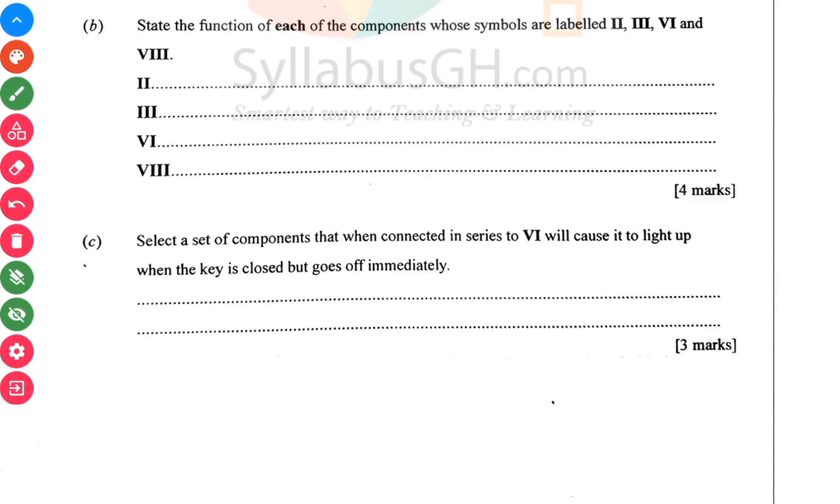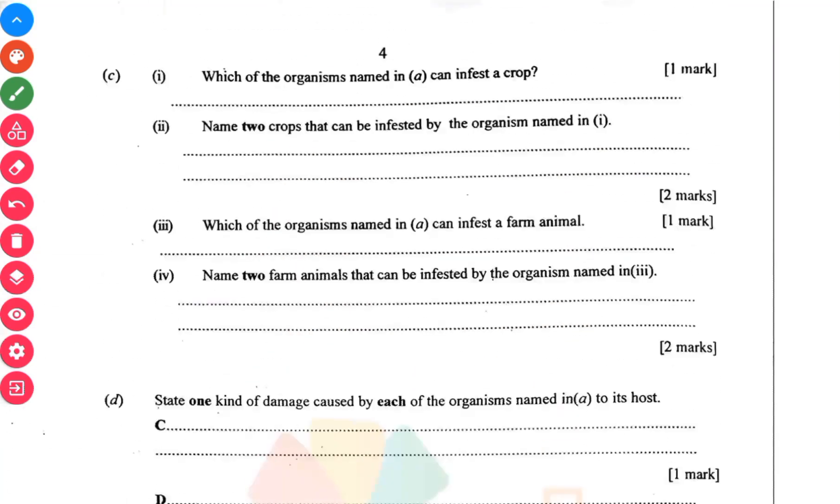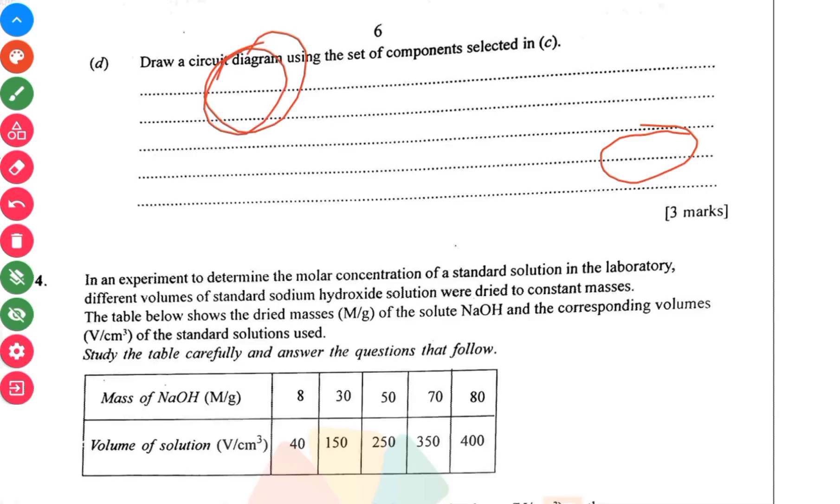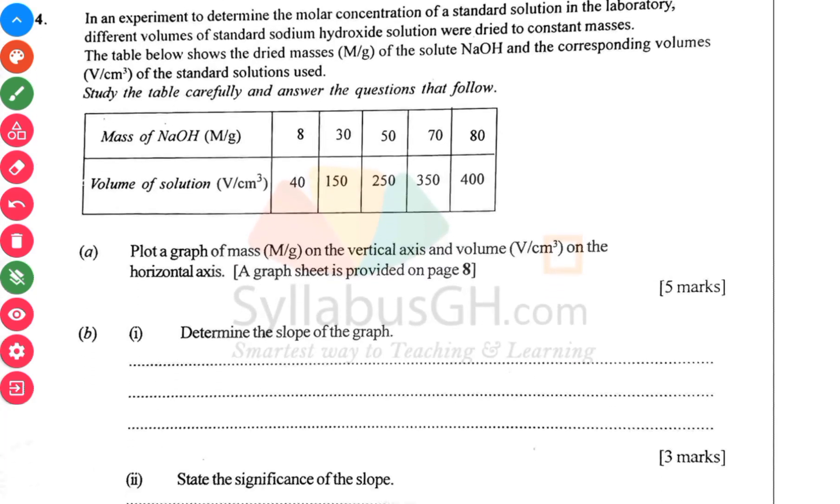C says select a set of components that when connected in series to VI will cause it to light up when the key is closed but off immediately. The set of components that you would have to select that would cause it to light up and then go off immediately is mainly the capacitor. Draw a circuit diagram using the set of components in series.